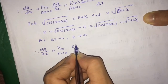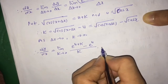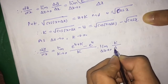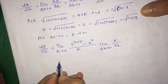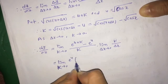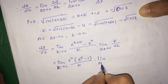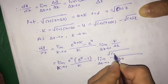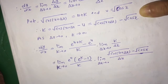In this situation, as δx tends to 0, you can see that k also tends to 0. You can verify this by substituting the value of δx in the expression for k. Now dy/dx is equal to limit k tends to 0 of exponential(u + k) minus exponential(u), divided by k, times δx.